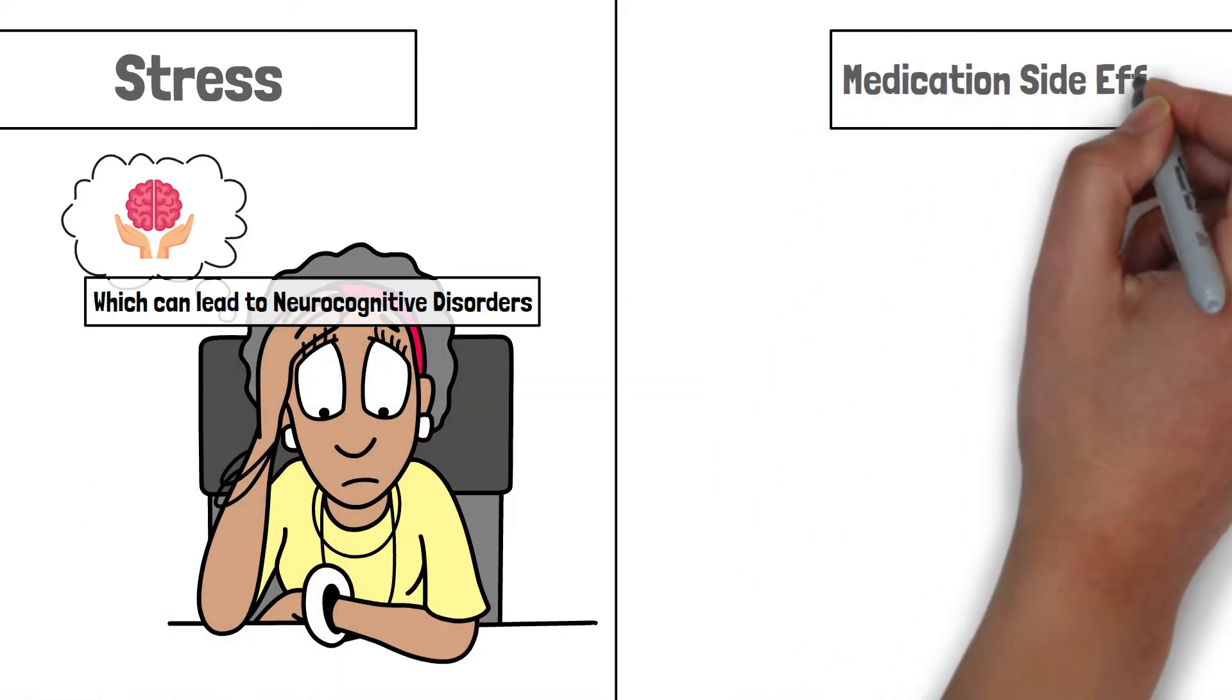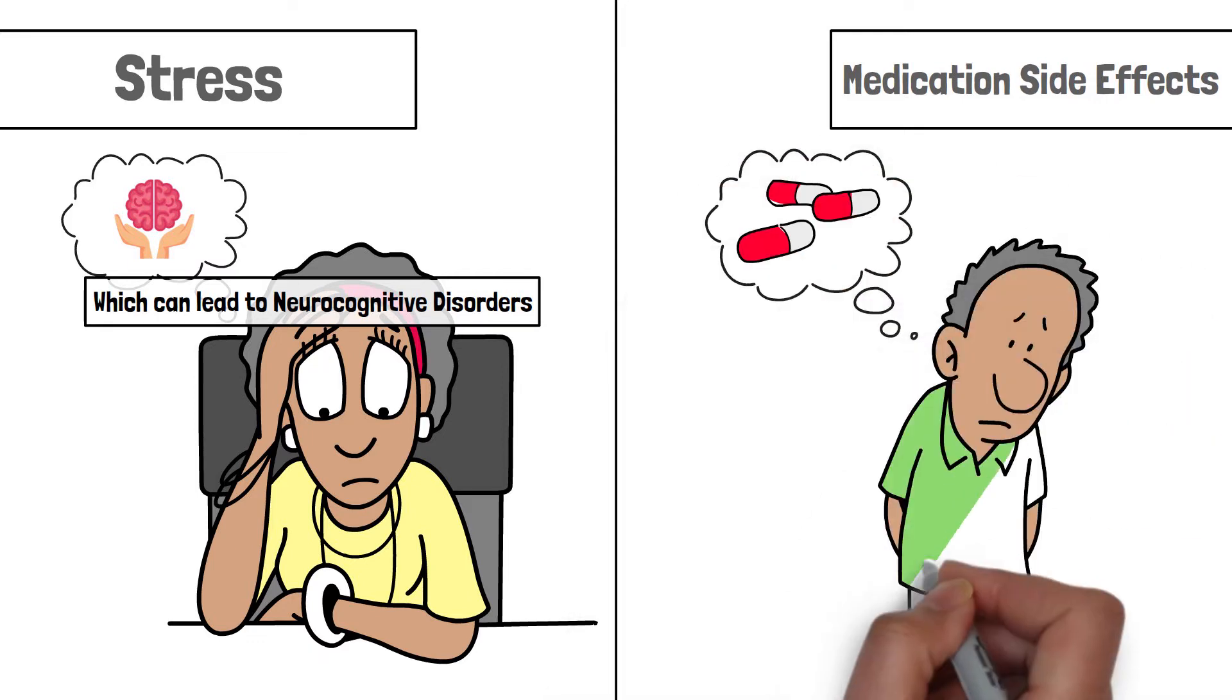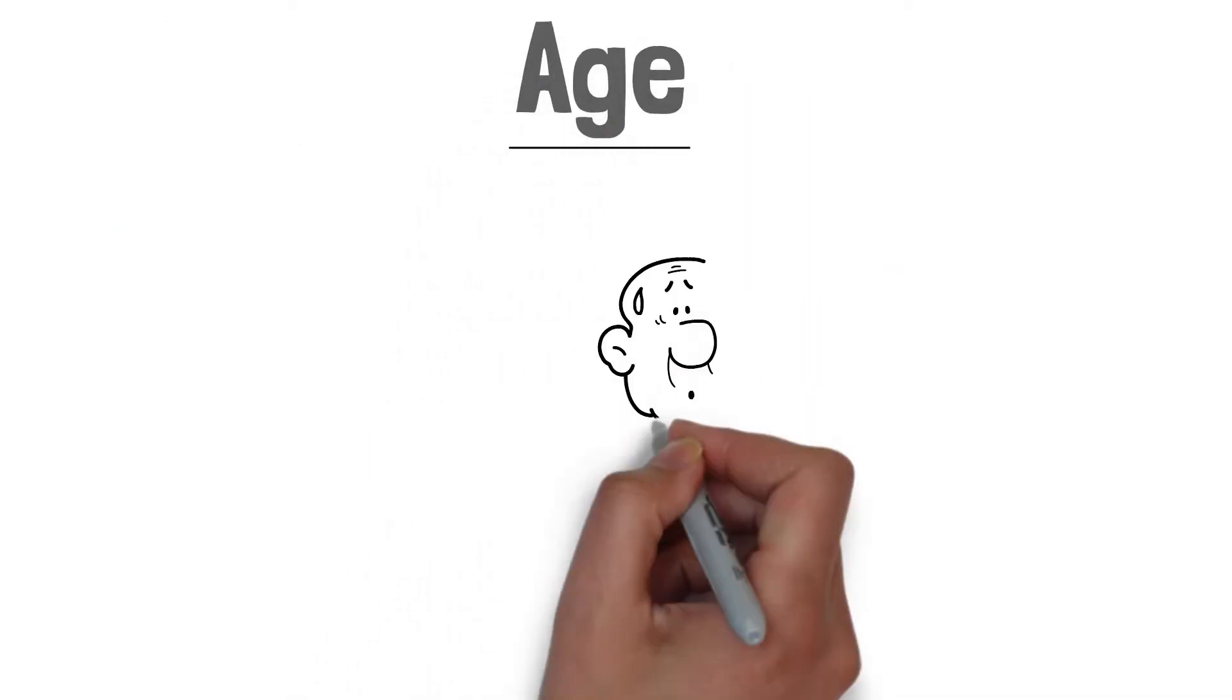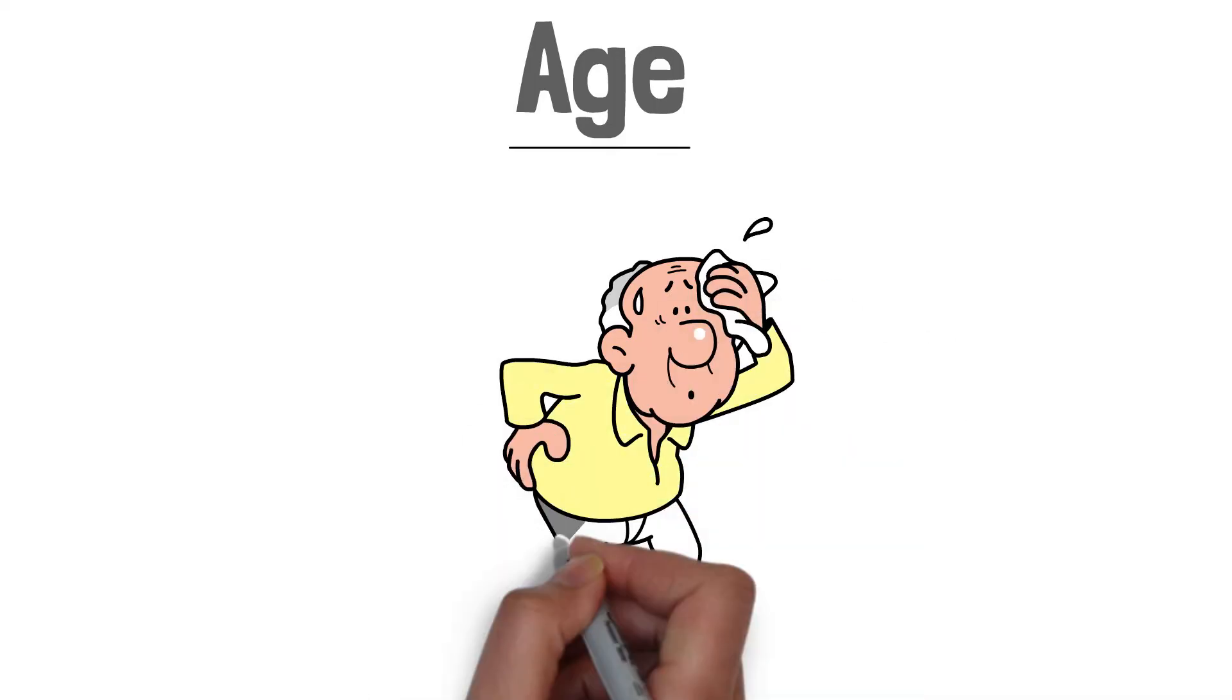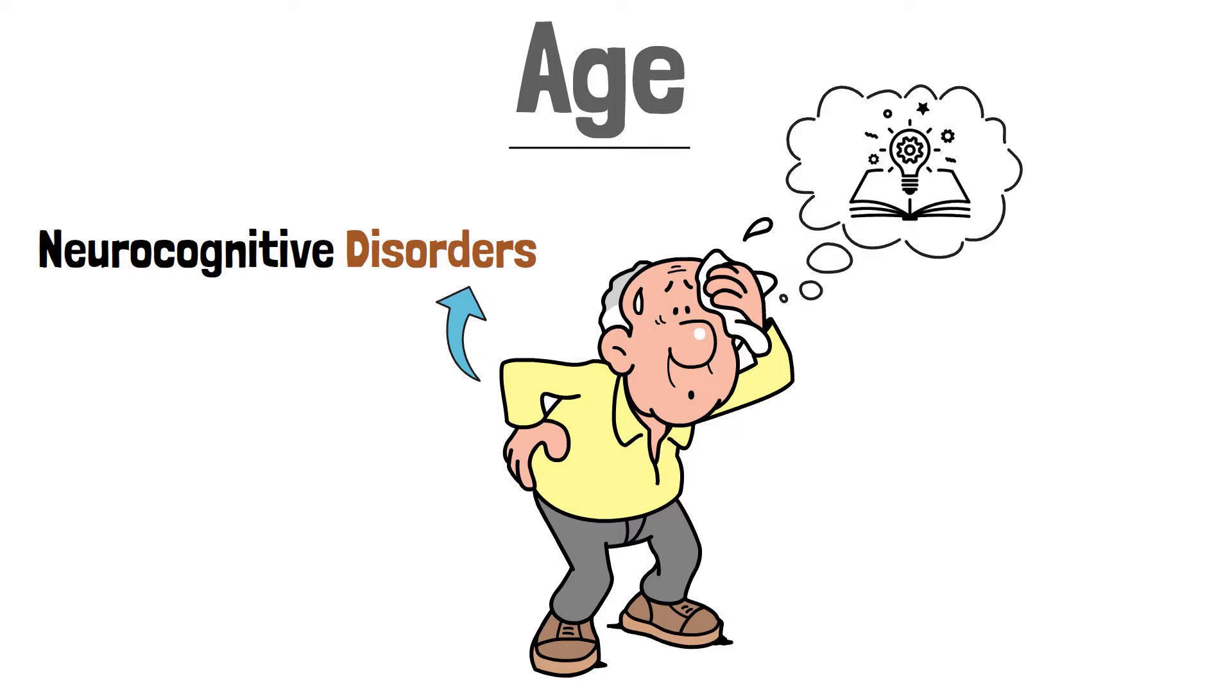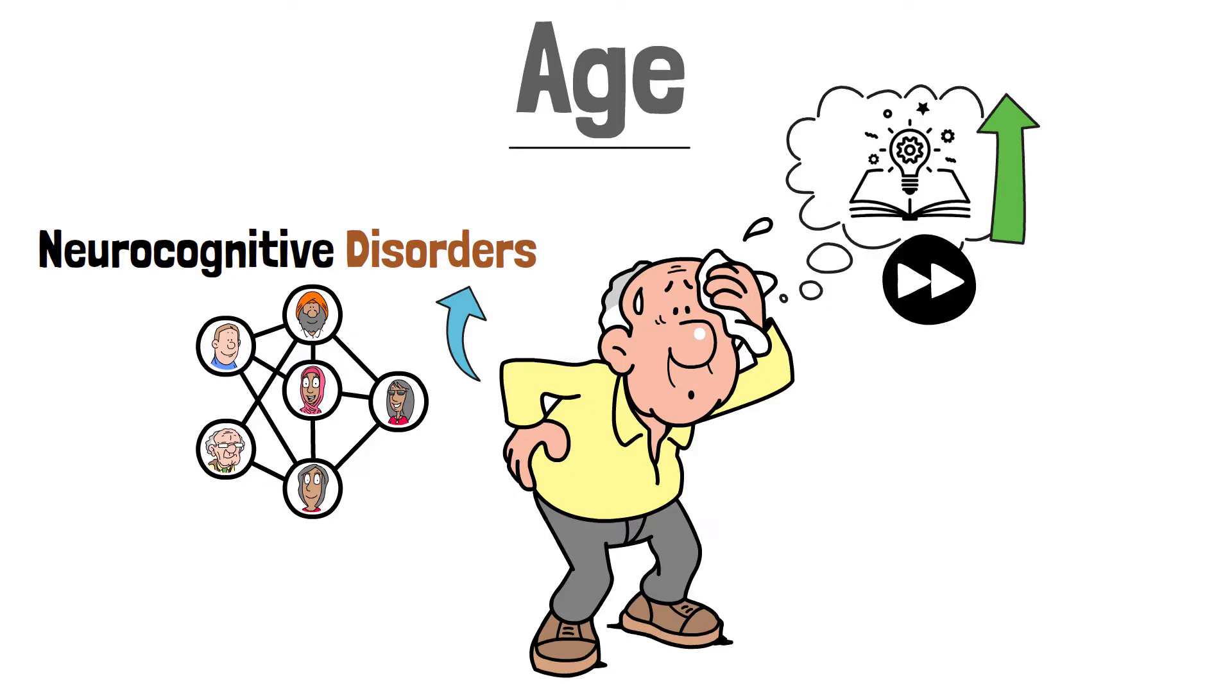Medication side effects. Sometimes the side effects of some medications can also lead to cognitive weakness, especially if the medications are taken over a long period. Age. In old age, some parts of the brain may weaken, which is a common cause of neurocognitive disorders. The thing to understand is that there can be many causes of neurocognitive disorders, and sometimes there may be more than one cause. These were some causes.